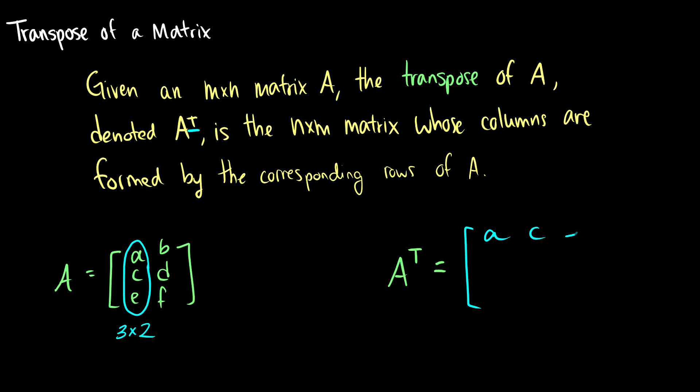So this becomes A, C, E across and the second column B, D, F becomes the second row. So as you can see, they kind of did a flip and twist.